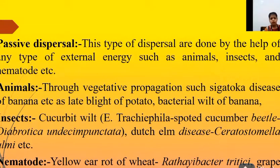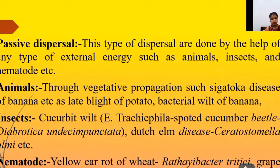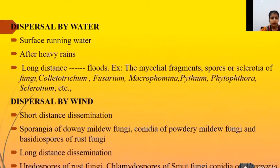Via insects, examples include cucumber beetle wilt and Dutch elm disease. Beetles can help spread these diseases. Via nematodes, yellow ear rot of beet is caused by Clavibacter tritici. These are examples of passive dispersal through insects and nematodes.